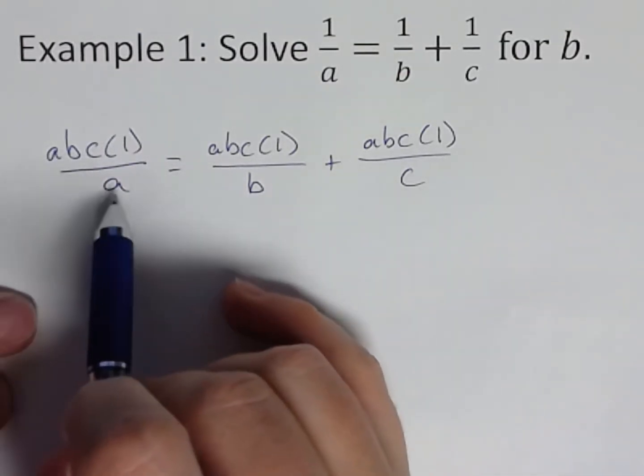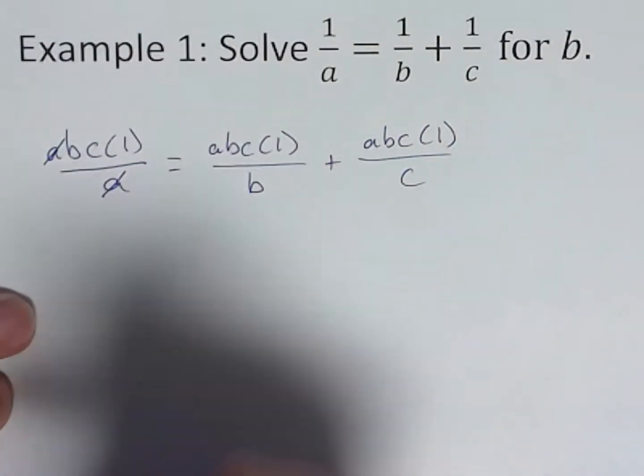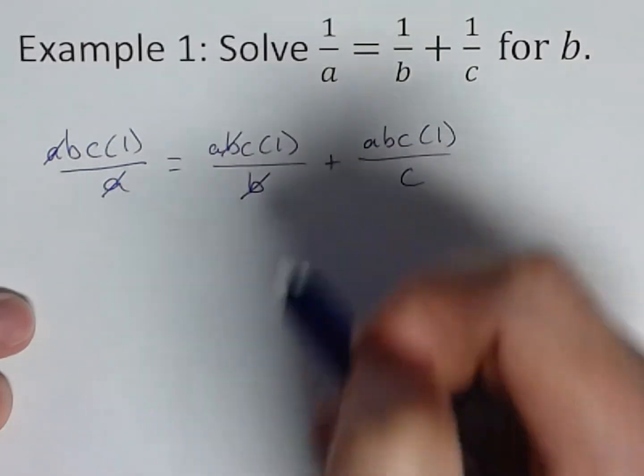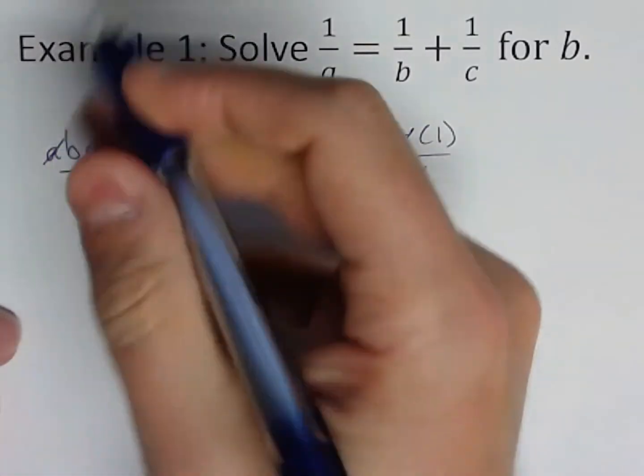Well, what is A over A? Well, it's 1. It divides out. So we can go ahead and divide that out. What's B over B? Same thing. And C over C. Now let's rewrite here and see where we're at.